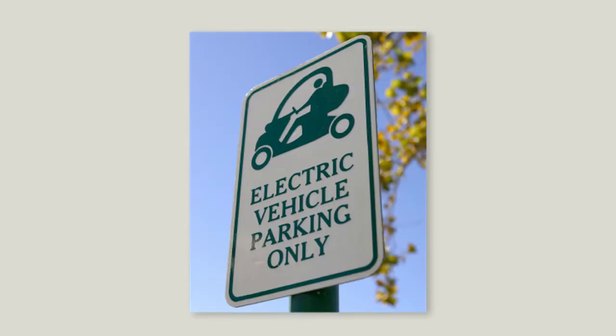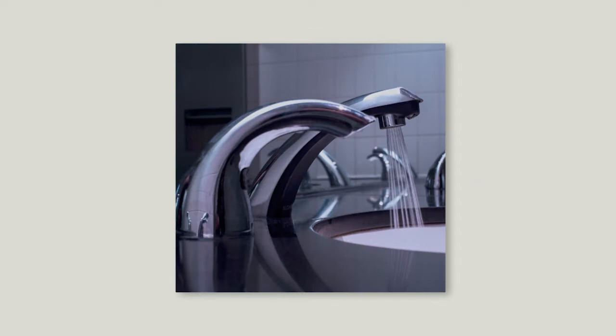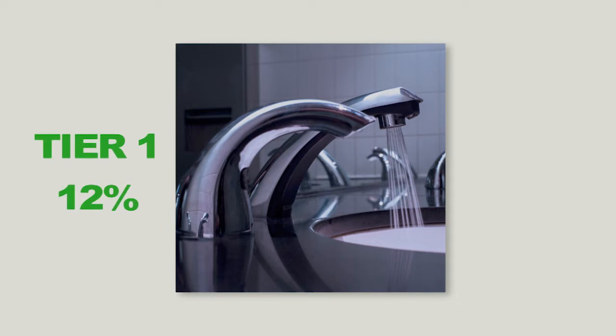One example in the 2019 Cal Green Code is Electric Vehicle Charging Infrastructure. Tier 1 requires 8% of parking spaces to be designated for electric vehicles versus the mandatory 6%, and Tier 2 requires 12%. Another example is under the Water Efficiency and Conservation Division: indoor water use for Tier 1 is a 12% savings beyond mandatory minimums, and Tier 2 is 20%. There are tier options for every division of Cal Green, but only certain mandatory measures that can be made more restrictive are provided in the tiers.